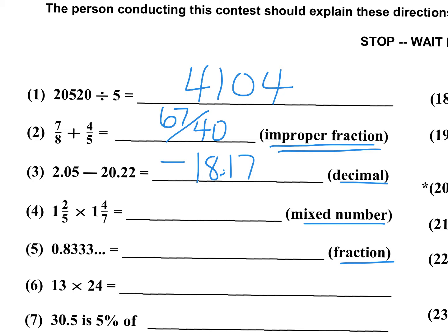Number four: 1 and 2 fifths times 1 and 4 sevenths — mixed number is specified. So 5 times 1 is 5, plus 2 is 7, giving me 7 over 5. Those 7s will cancel out. Over here, 7 times 1 plus 4 gives me 11. So I have 11 over 5 as a mixed number, which is 2 and 1 fifth.